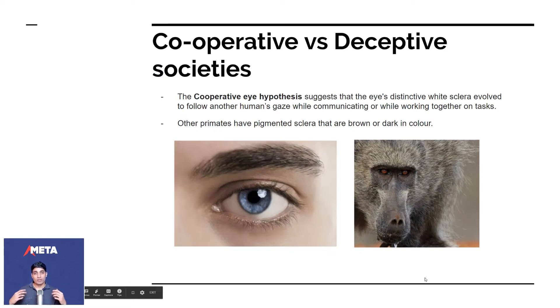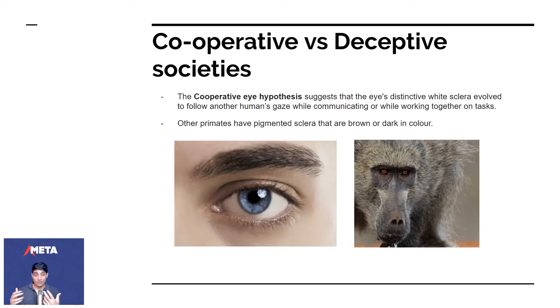There's something about cooperative versus deceptive societies. When another person is looking at us, one of the signs of attention is where our eyeballs move. If I'm looking to the left, I can either turn my head to the left or just move my eyes to the left — two ways to do it.